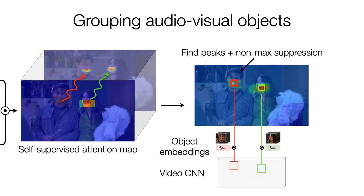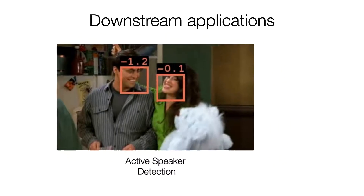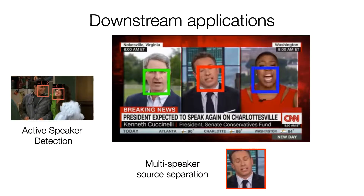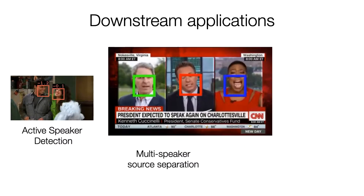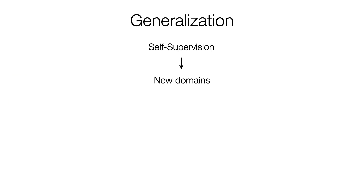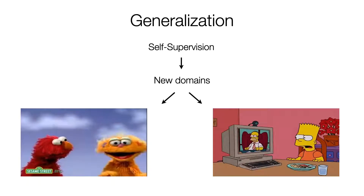Every peak now corresponds to a distinct object and can be used to extract visual features that describe it. Those features may then be applied to useful downstream tasks such as active speaker detection, multi-speaker source separation or audiovisual synchronization. Our pipeline is learned entirely through self-supervision and can therefore be applied in new domains such as videos of puppets or cartoons.